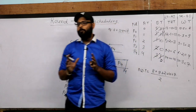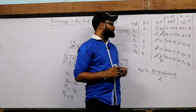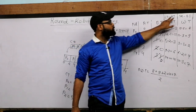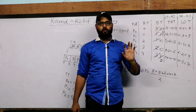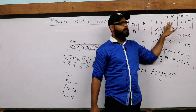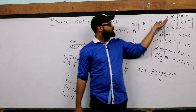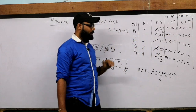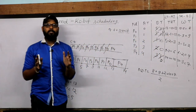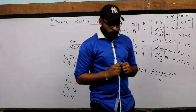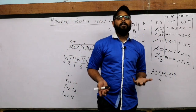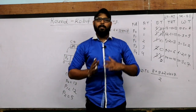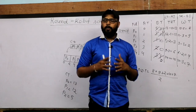Just calculate the average waiting time or average turnaround time — it's a very simple philosophy. Always remember these two formulas: CT minus AT for turnaround time, and TAT minus BT for waiting time. In the next topics, we will solve more problems on Round Robin scheduling algorithm, Shortest Job First algorithm, and Shortest Remaining Time algorithms. I will cover all topics in coming lectures. Thank you very much.